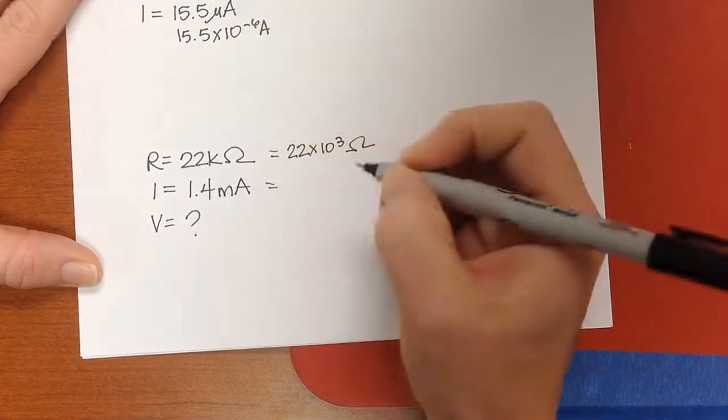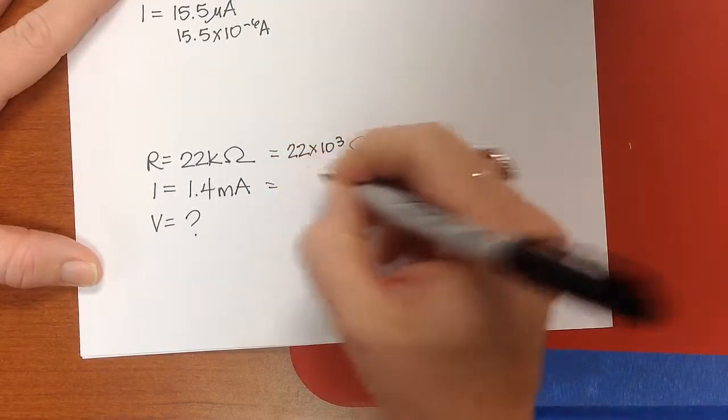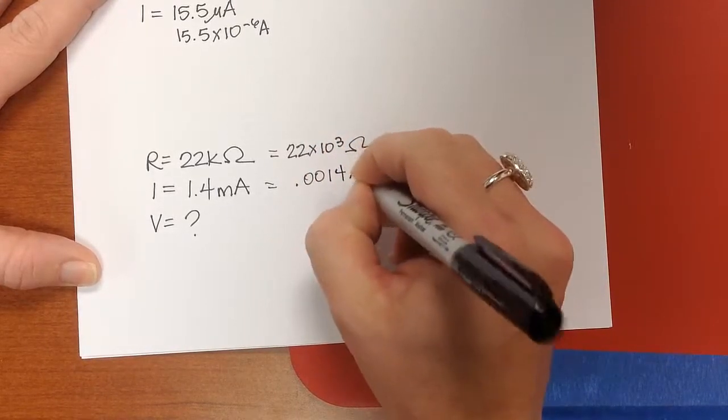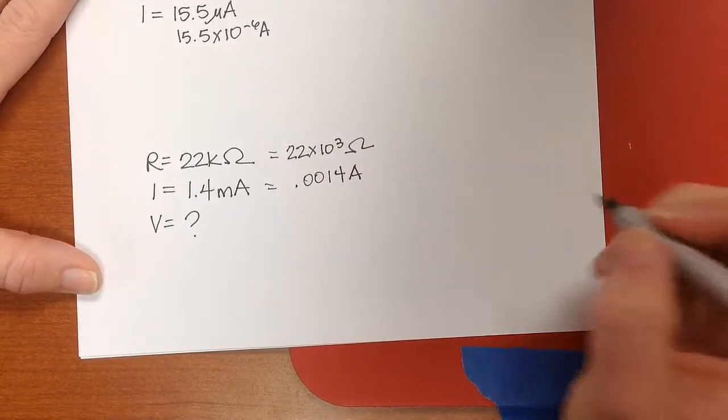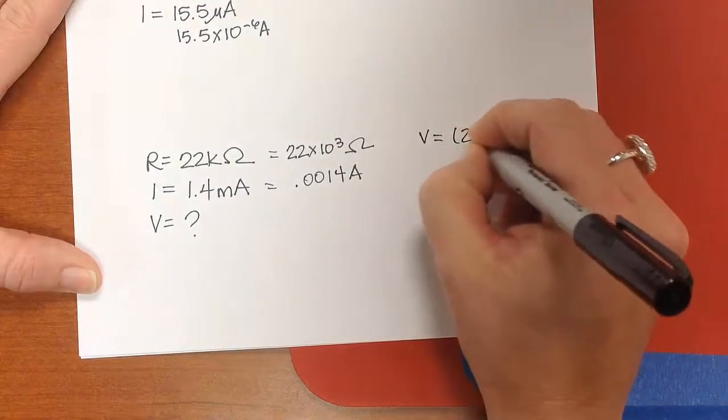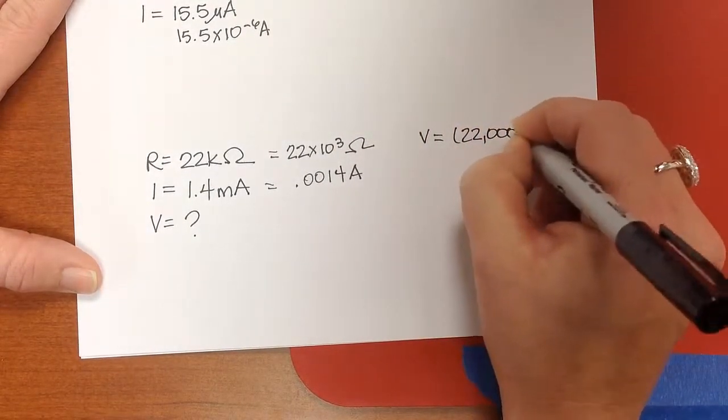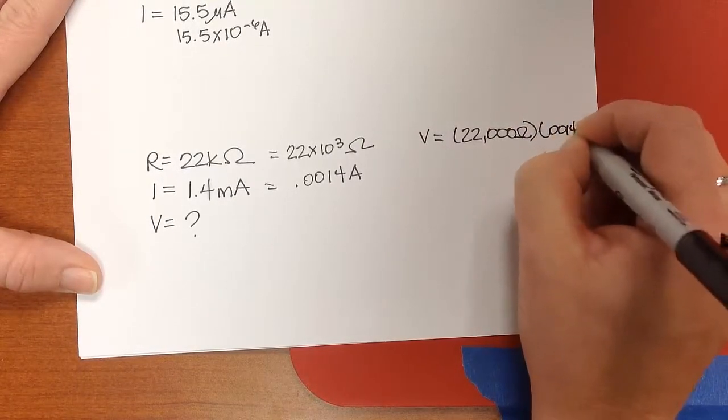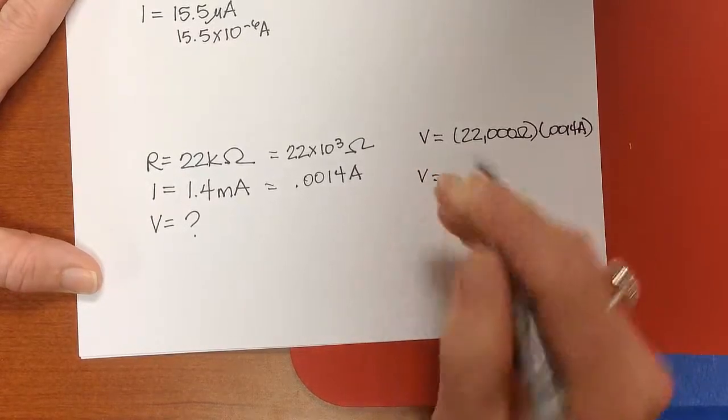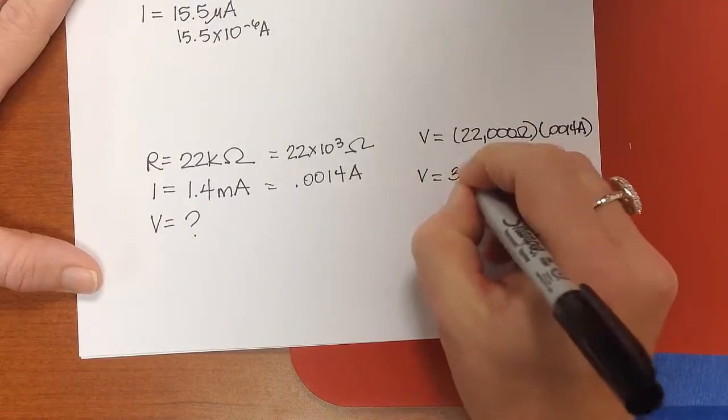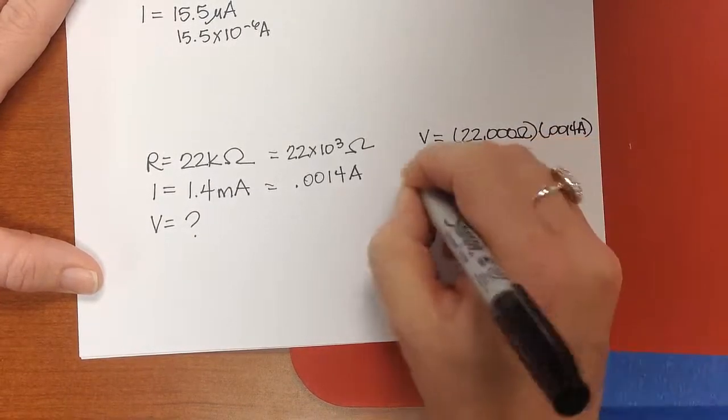And 1.4 milliamps would be 0.0014 Amps. And we need to know V then, so V is going to be equal to 22,000 Ohms times 0.0014 Amps. And when we multiply those together, we get the voltage is equal to 30.8 Volts.